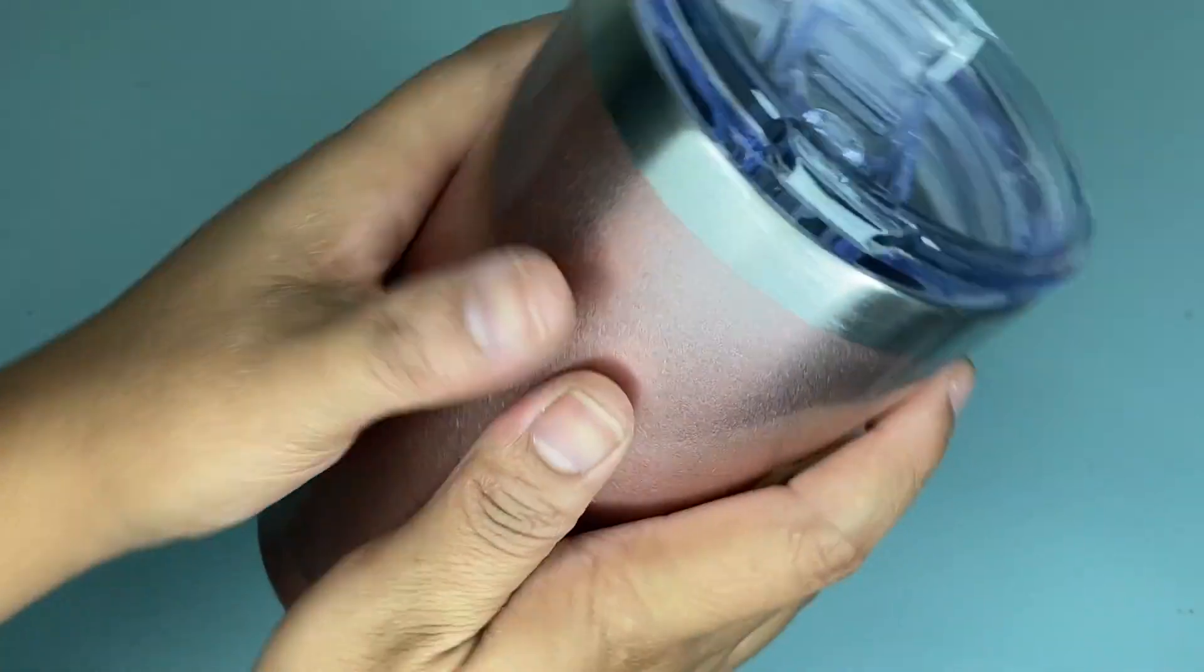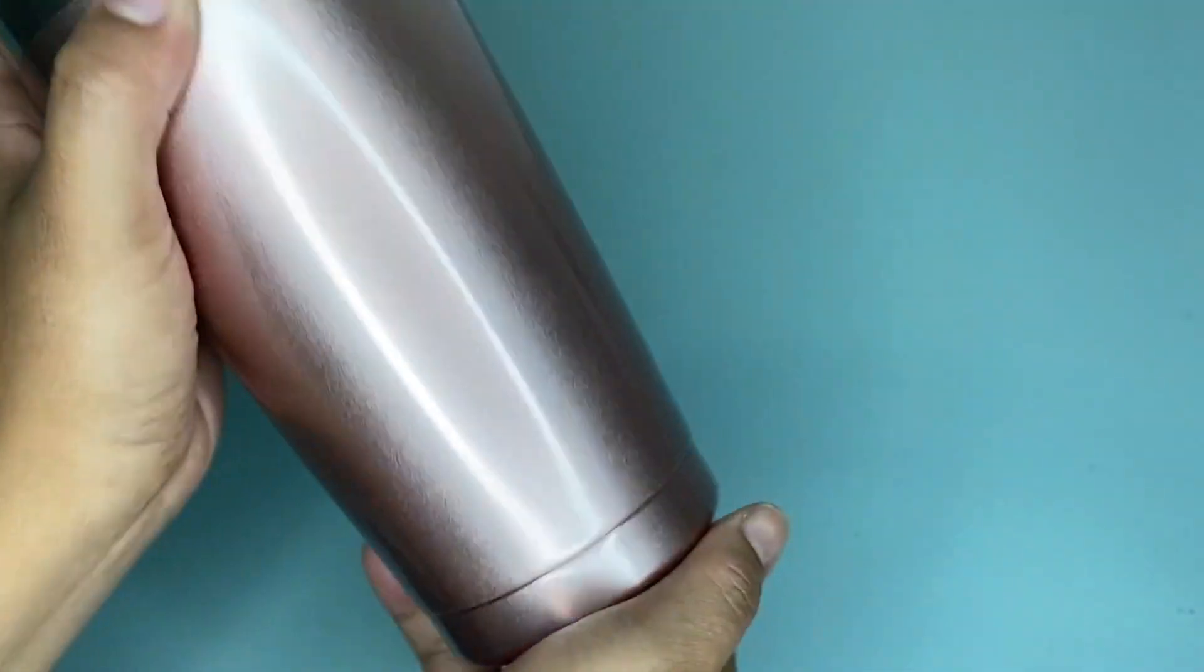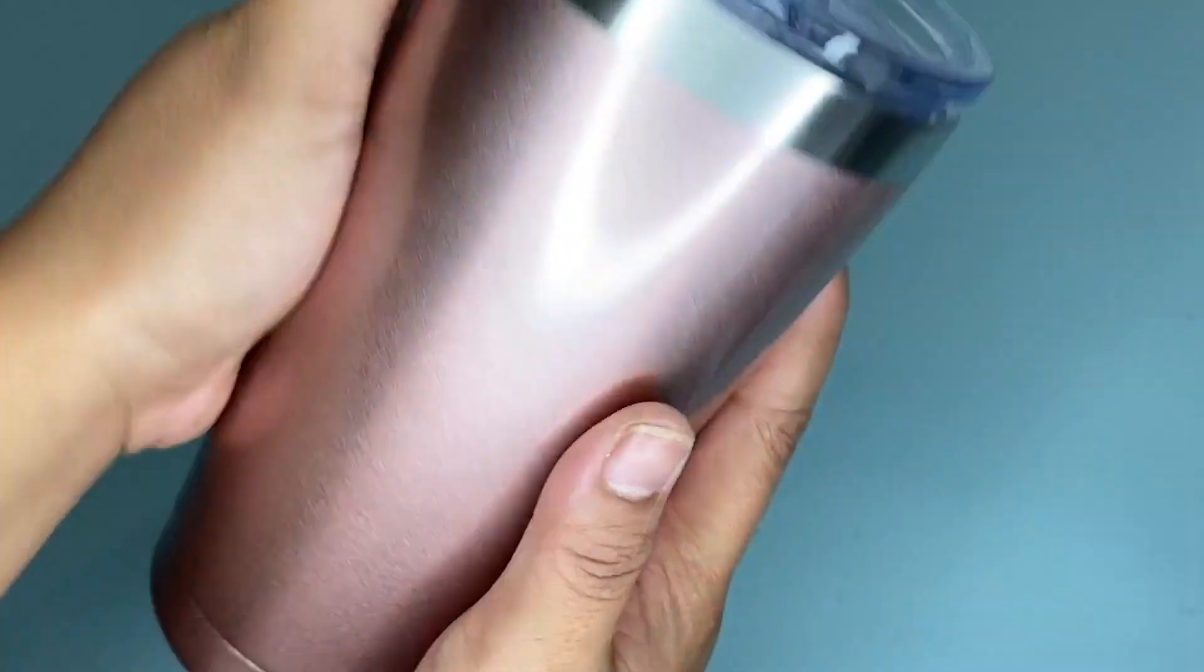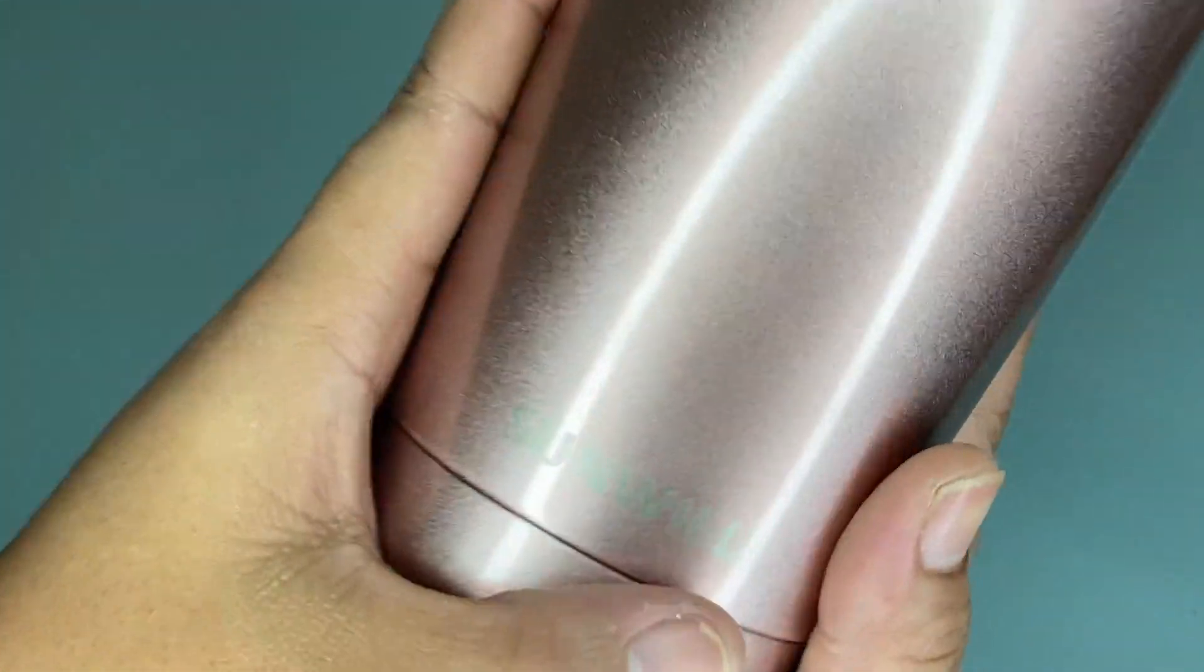Hi guys, so today I'm going to share with you my honest review about this Sunwheel tumbler with lid. We have here this tumbler and the package comes with this vacuum insulated double wall travel tumbler in rose gold color.